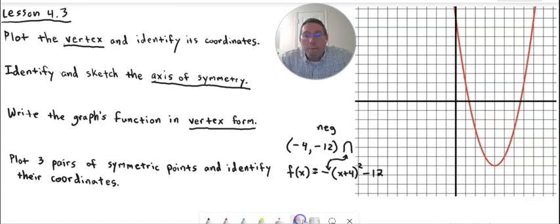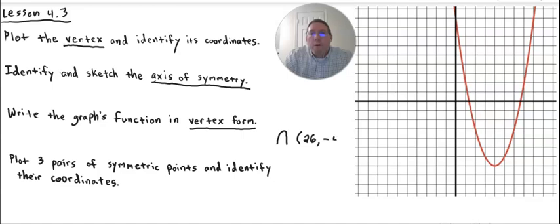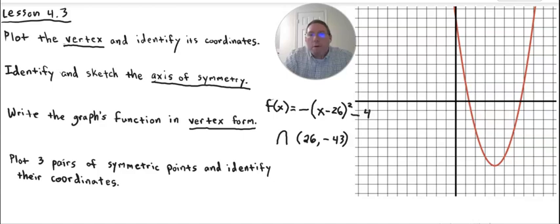Let's try one more example. Say it's a negative parabola and the vertex is at (26, −43). Then the function is f(x) = −(x − 26)² − 43, because it's a negative parabola, so we put a negative in front, and the x-coordinate is positive 26 so we write minus 26, and the y-coordinate is negative 43 so we write minus 43. That's the vertex form of the function.